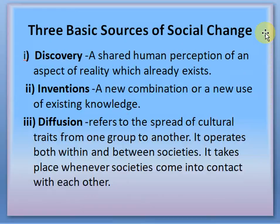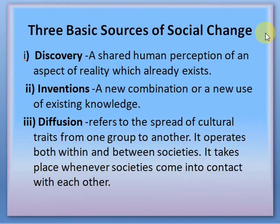What are the three basic sources of social change? First is discovery, second is invention, and third is diffusion. Discovery is a shared human perception of an aspect of reality which already exists. Invention is a new combination or new use of existing knowledge. Diffusion refers to the spread of cultural traits from one group to another, operating both within and between societies. When information or culture diffuses, social change also occurs.